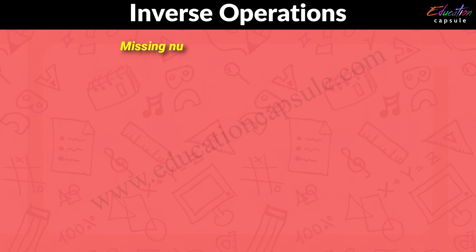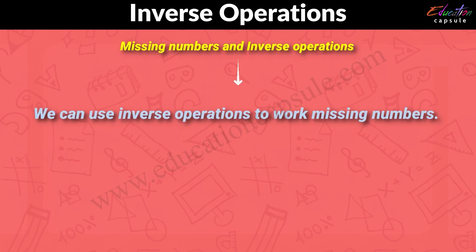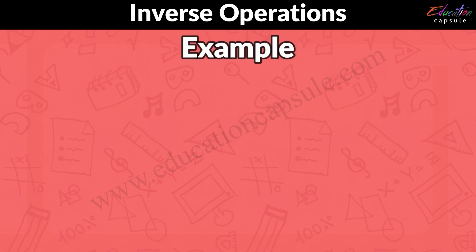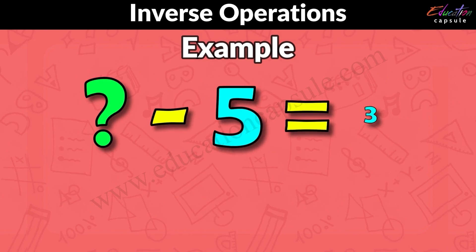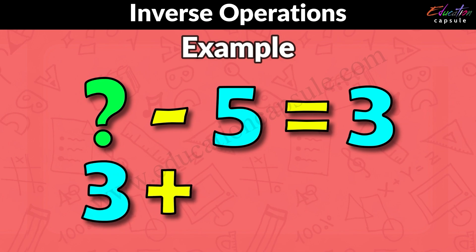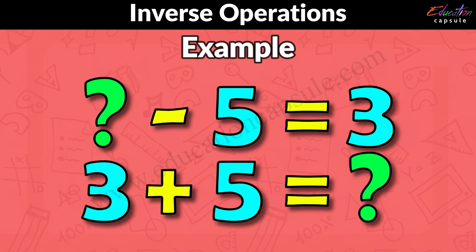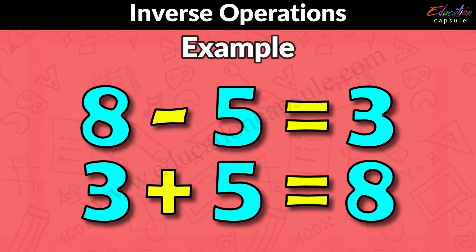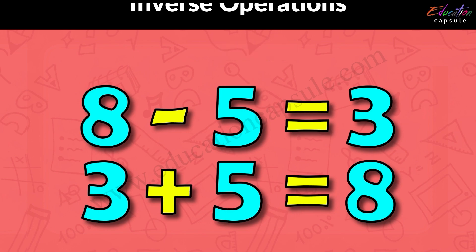Now, missing numbers and inverse operations. We can use inverse operations to find missing numbers. For example, something take away 5 is equal to 3. So we can inverse the operation to make it 3 added to 5 gives you that something. So the missing number here is 8.